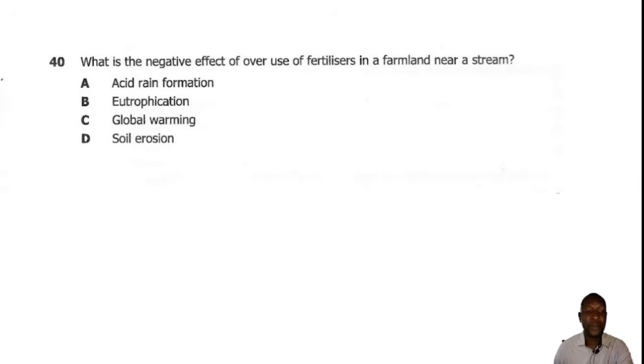Question 40. What is the negative effect of overuse of fertilizers in a farmland near a stream? When farms are using too much inorganic fertilizer, when it rains, the fertilizer would end up being washed into the stream, which will end up causing eutrophication. So the correct answer is B.